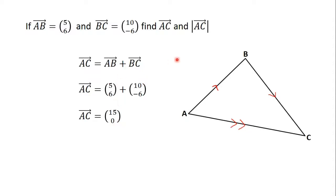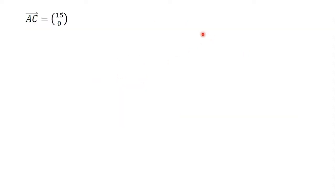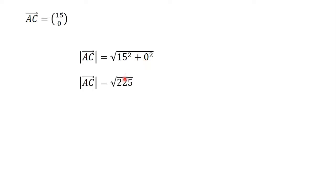The question says we should find the magnitude of vector AC. The magnitude of vector AC is equal to the square root of the x-component squared plus the y-component squared. The x-component is 15 and the y-component is 0, so we get the square root of 15 squared plus 0 squared, which equals the square root of 225, giving us 15. So the magnitude of vector AC is equal to 15 units.